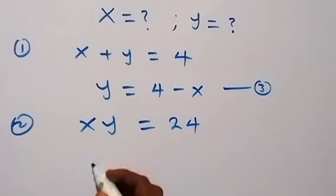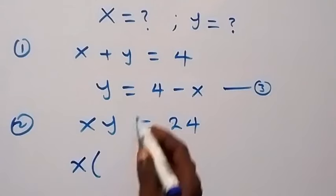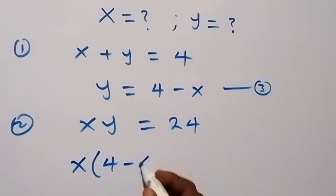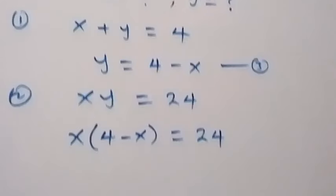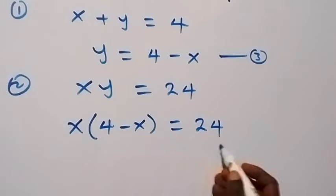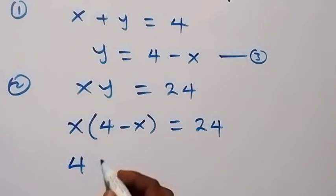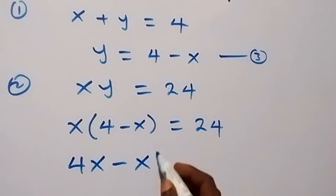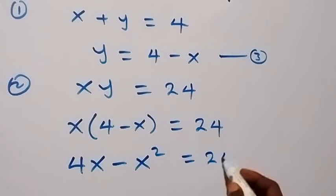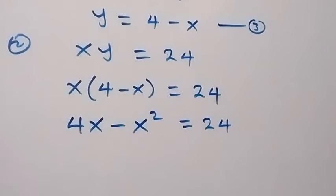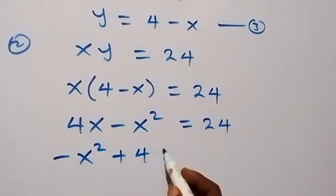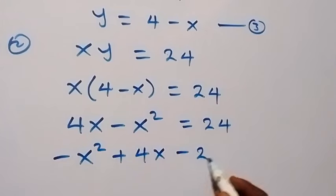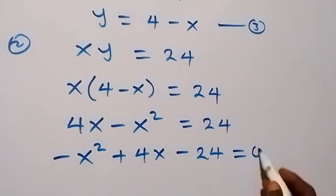Equation 2 will become x multiplied by (4 minus x) equals to 24. Then we open the bracket and we have 4x minus x squared equals to 24. We can rearrange this as minus x squared plus 4x, then take 24 to this side, we have minus 24 equals to 0.